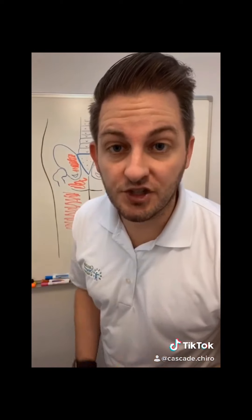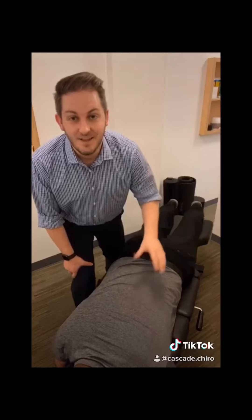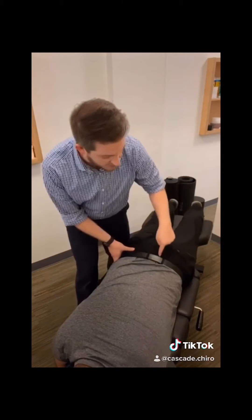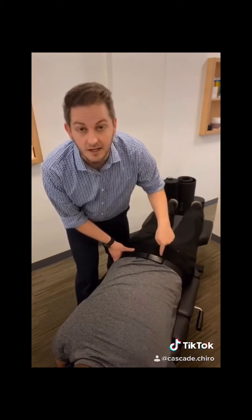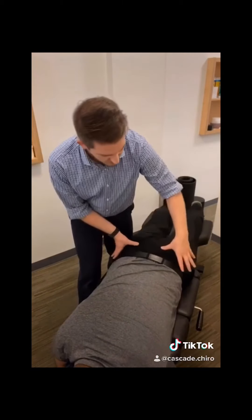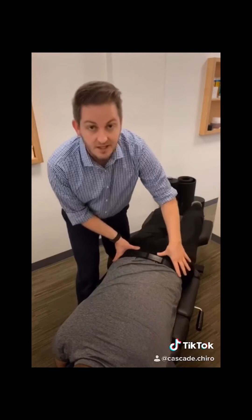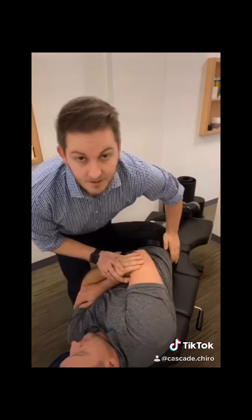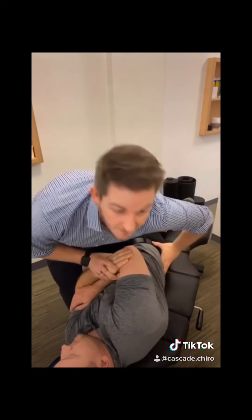One of the key things with SI joint dysfunction is the pain never goes below the knee. It's always dull, always achy, always deep. One of the best things you could do for SI joint dysfunction is adjust the joint right here. We have to make sure it's even and that it moves the same on both sides. An adjustment might look like this.